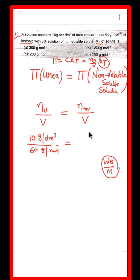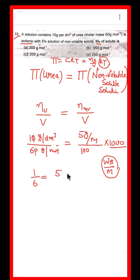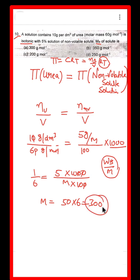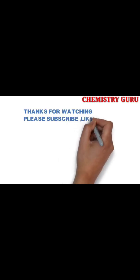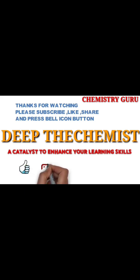For the non-volatile solute, a 5% solution means 5 grams per 100 mL. Assuming density = 1, volume = 100 mL = 0.1 L, so moles = 5/M. Setting the two osmotic pressures equal: 10/60 = (5/M) × (1000/100). Solving gives M = 300 grams per mole as the molecular mass of the non-volatile solute.